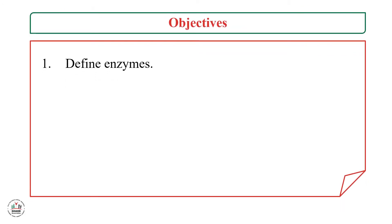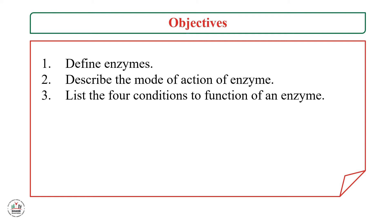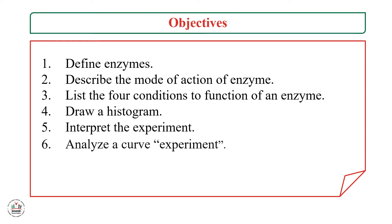Our objectives of this lesson are: first, define enzymes; second, describe the mode of action of enzyme; third, list the four conditions to function of an enzyme; fourth, draw a histogram; fifth, interpret the experiment; sixth, analyze a curve experiment.